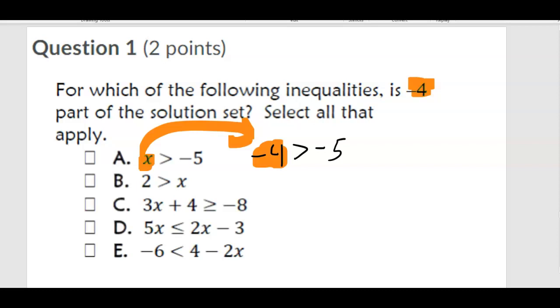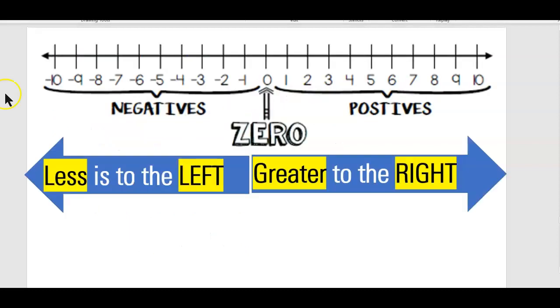Let's take a look at a nice handy dandy number line here that I have for us, especially to find out if negative four is greater than negative five. Negative four greater than negative five? Where's negative four? Negative four is here on the number line. Where's negative five? Negative five is here on the number line. So less is to the left, less is to the left. Greater to the right, greater to the right. Which one's greater?